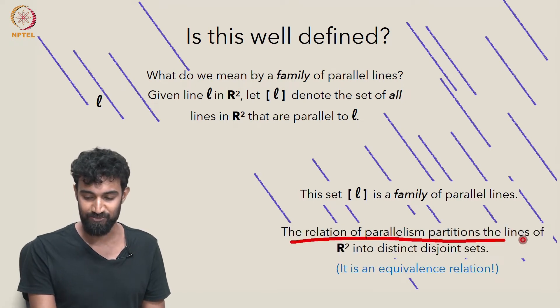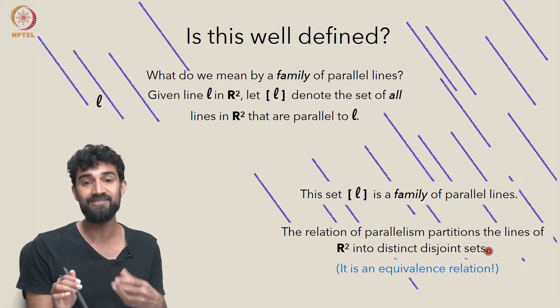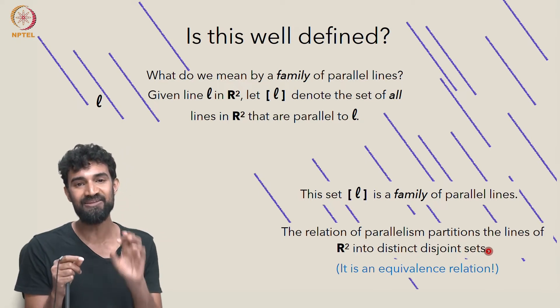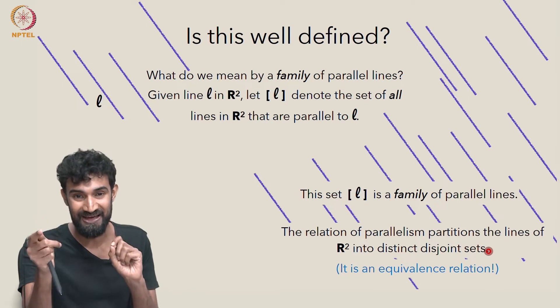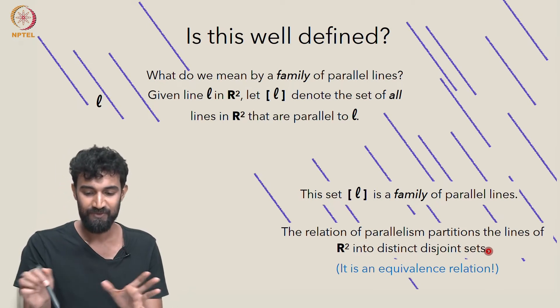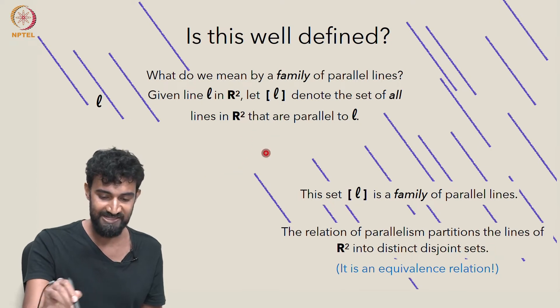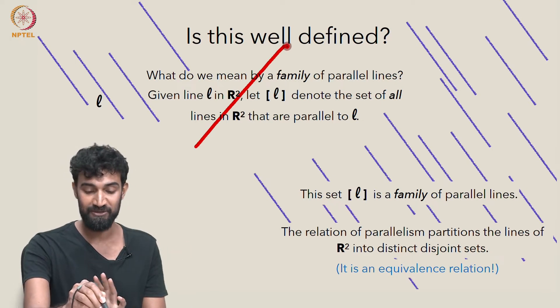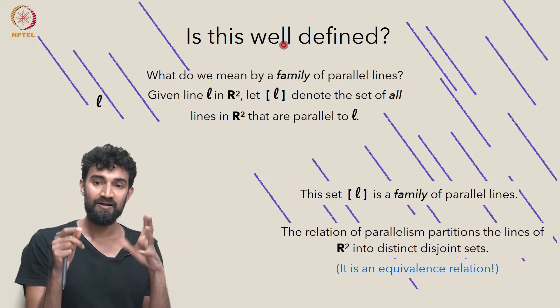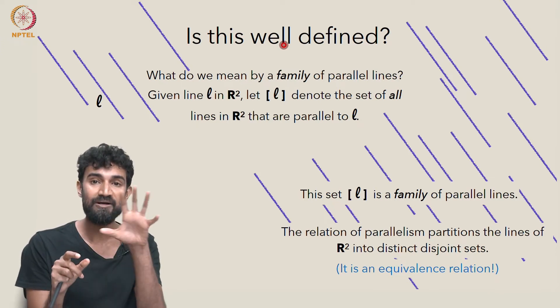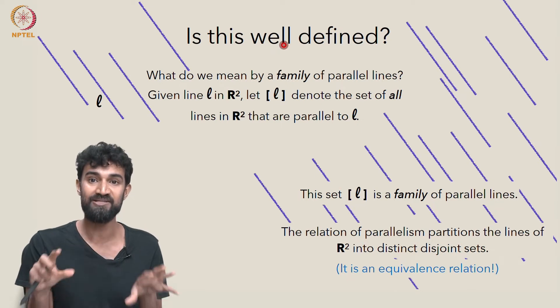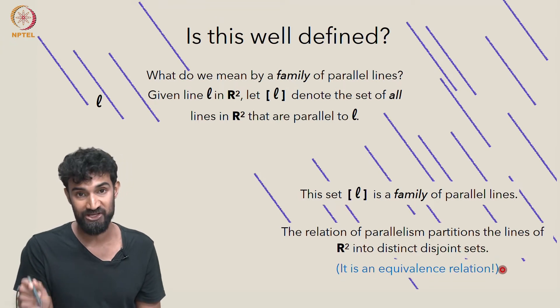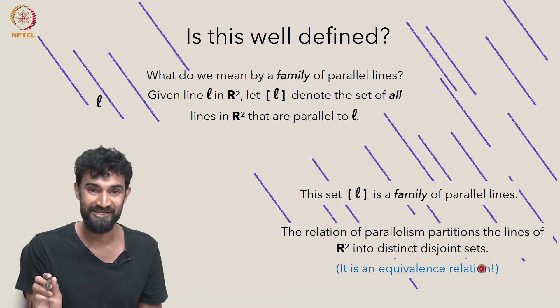The relation of parallelism partitions the lines of R² into distinct disjoint subsets. A line in R² will belong to exactly one family. It can't belong to this family and also that family. All of these parallel lines will form one family. On the other hand, all of the lines that are parallel to this guy, that'll be another infinitely large family, but it'll be disjoint from this one. And in this way, the set of all lines in R² is partitioned into infinitely many distinct disjoint families. And this is because parallelism is an equivalence relation, if you know what that is.